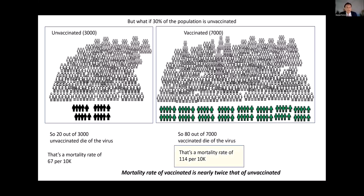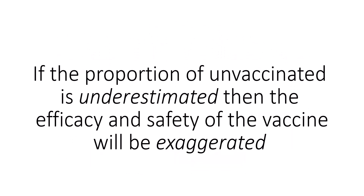In this case the mortality rate of the vaccinated is nearly twice that of the unvaccinated, which would be very powerful evidence that the vaccine is ineffective and unsafe. That's why it's critical to get an accurate estimate of the true proportion of unvaccinated in the population, because if that proportion is underestimated, the efficacy and safety of the vaccine will necessarily be exaggerated.